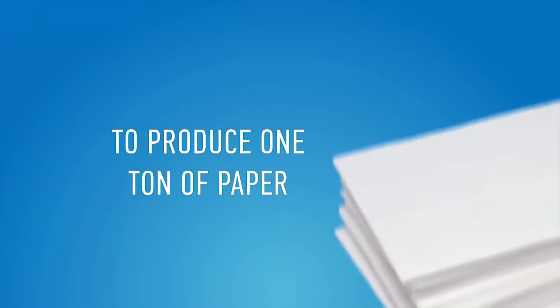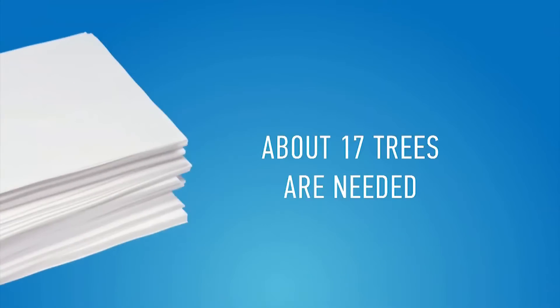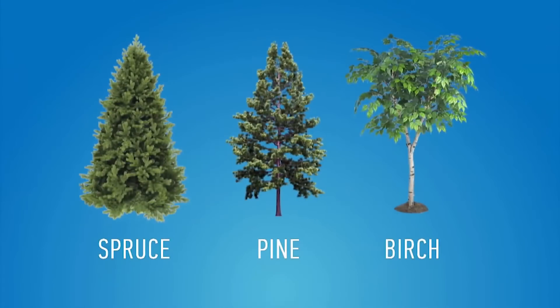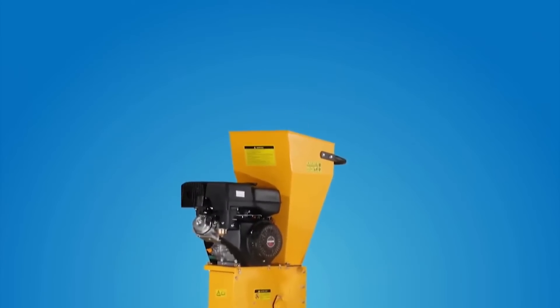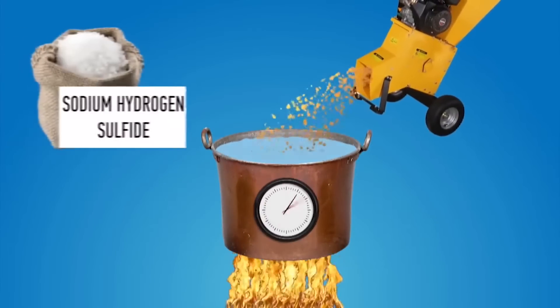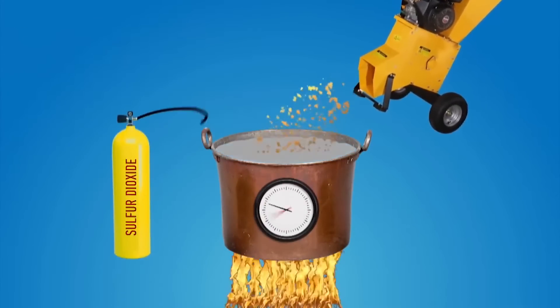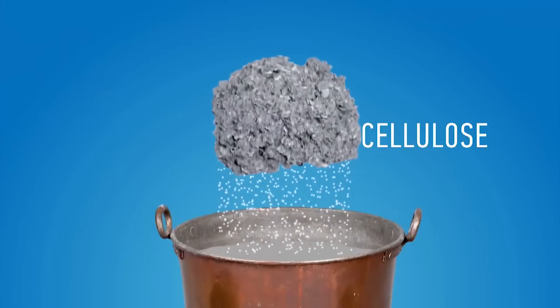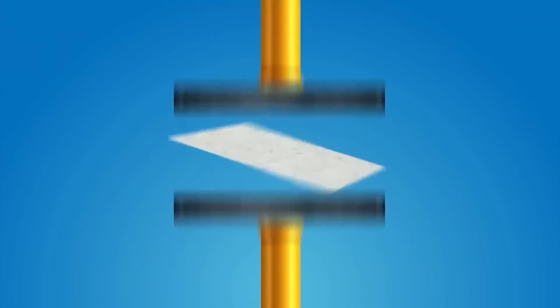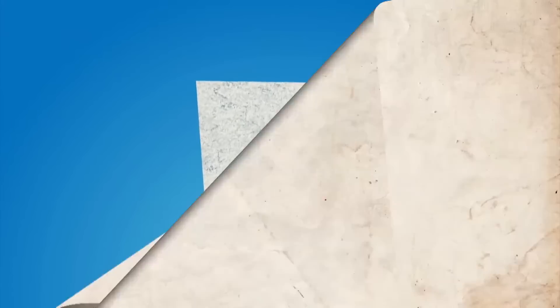To produce one ton of paper, about 17 trees are needed. Usually, it's spruce, pine, or birch. The wood is converted into chips and boiled for 12 hours with sodium hydrosulfide and sulfur dioxide. As a result of chemical reactions, pure cellulose is produced. It's compressed into sheets and sent to the paper factory.